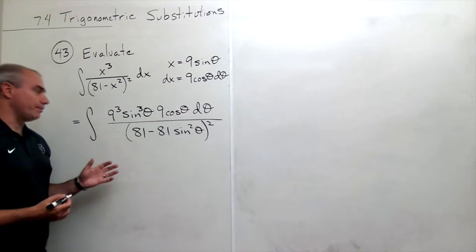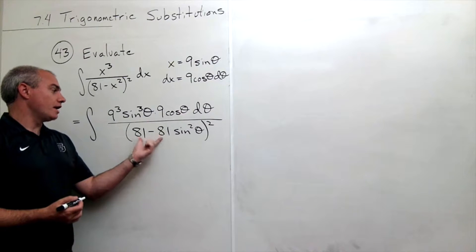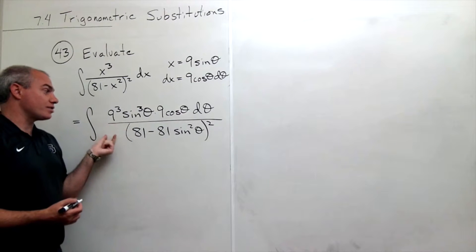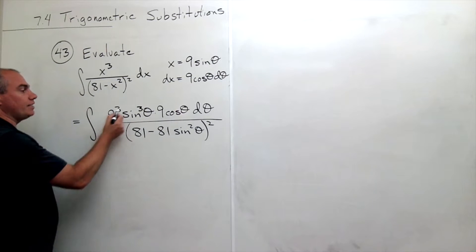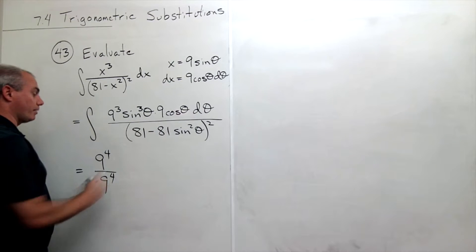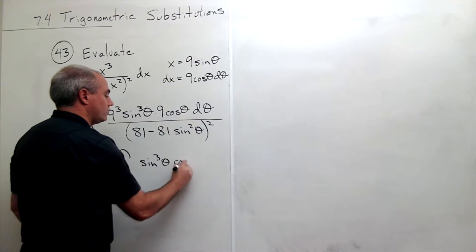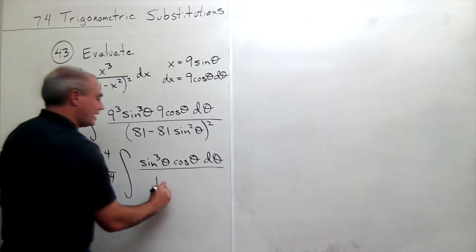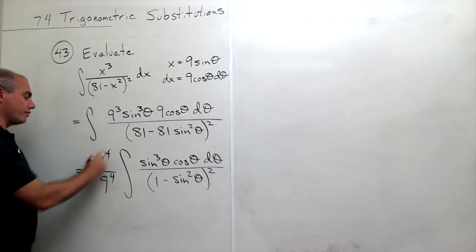Now let's simplify. 81 is 9 squared, and 9 squared quantity squared is 9 to the fourth. On top, we have 9 cubed times 9, which is also 9 to the fourth. So we have 9 to the fourth on both top and bottom, and they cancel. We're left with the integral of sine cubed theta times cosine theta d theta divided by 1 minus sine squared theta quantity squared.